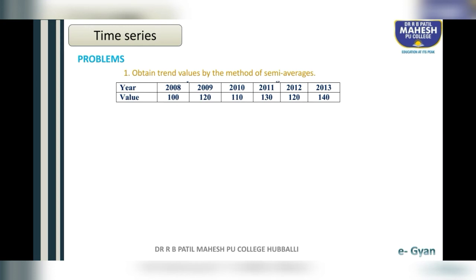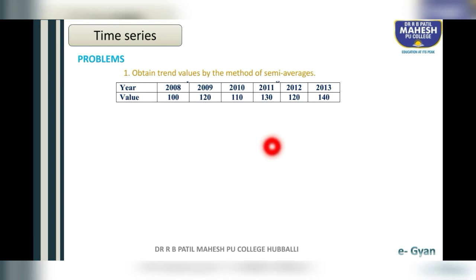To apply the semi-averages method, first we have to make two equal parts. Count the values: there are six values, so they can be divided into two equal parts of three and three.